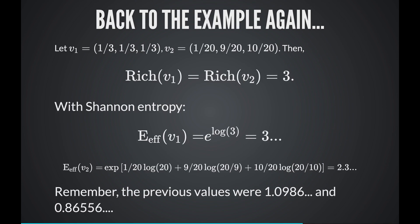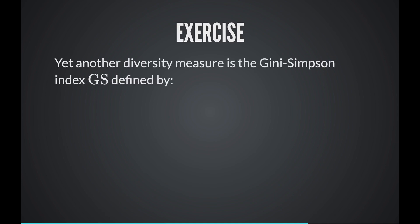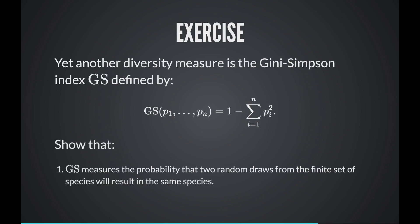Here's an exercise. There's another measure of diversity called the Gini-Simpson index, defined by 1 minus the sum of the squares of all Pi values. First, show that the Gini-Simpson index measures the probability that two random draws from the set of species will result in different species. Second, show that the effective transformation of the Gini-Simpson index is 1 over the sum of the squares of the Pi values.